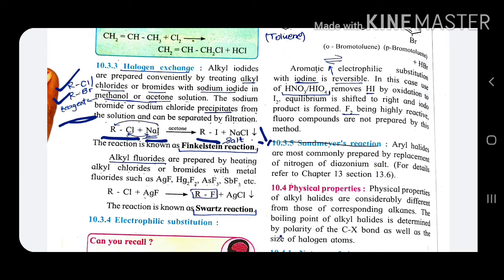Filter paper, funnel, and the solution that is formed, pour it. The residue, the precipitate that is formed, NaCl, it sticks to the filter paper. And what remains below is the filtrate, that is RI. And this reaction is called as Finkelstein reaction.